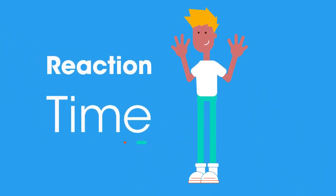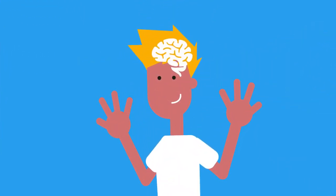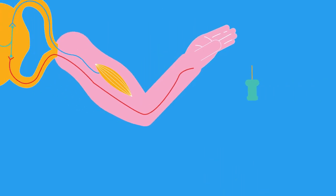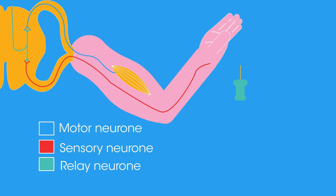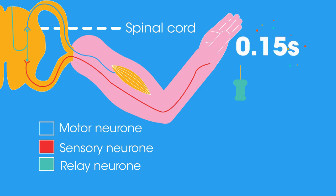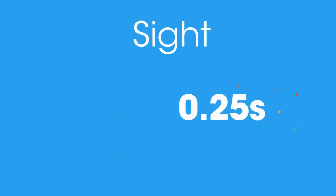Our reaction time does to some extent depend on what the stimulus is. The response time for sight and hearing are both slightly longer than for touch, as the brain is involved in processing the incoming data before an instruction can be transmitted for a suitable response. We respond to touch quite differently through the reflex arc, where the response is a reflex action mediated by the spinal cord and not the brain. Our reflex action to a touch takes about 0.15 seconds, to sound it's about 0.17 seconds, and to sight 0.25 seconds.